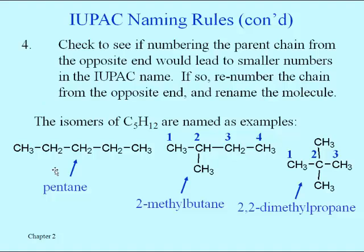Here's a fourth rule to add: we're going to have to number those carbons in the chain to locate substituents, and we want to number in the direction that gives us the smallest numbers in our name. That doesn't always mean we number from left to right — we number from whichever end gives us the lowest number. The idea is that these rules should lead everyone to the exact same name for a compound, even using the same numbers.